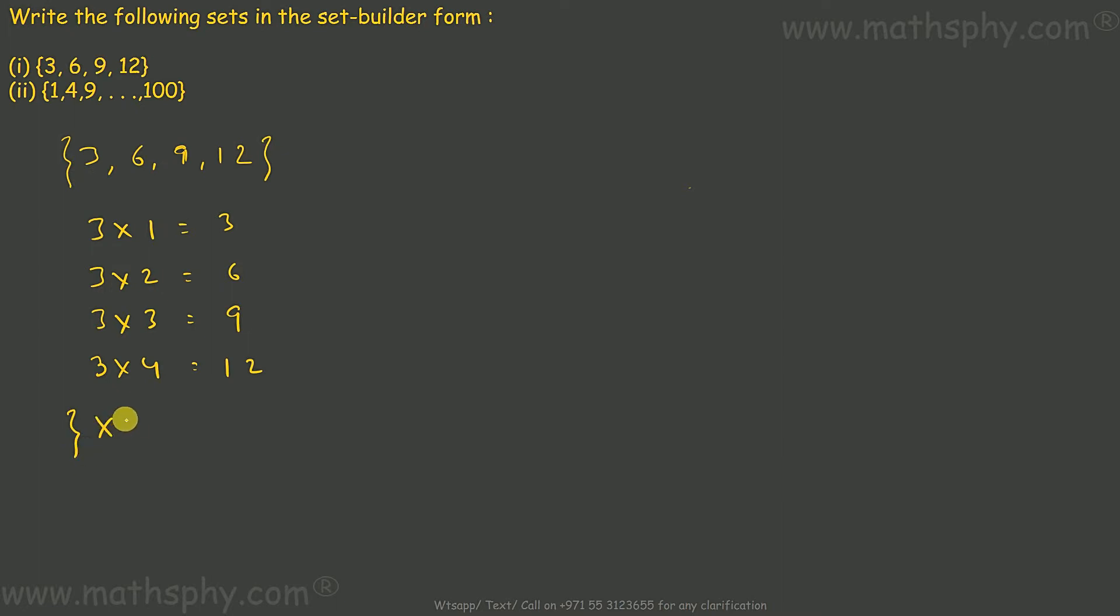So if I write it this way, the element X is such that X is equal to 3n. Here these 1, 2, 3, 4, I take them as n. Now all these n's are also natural numbers, so I write n belongs to set of natural numbers.